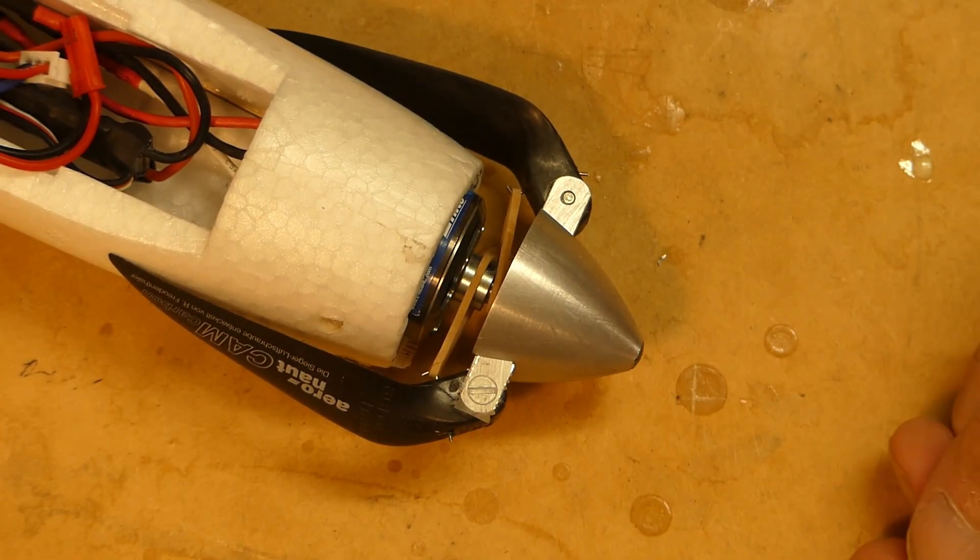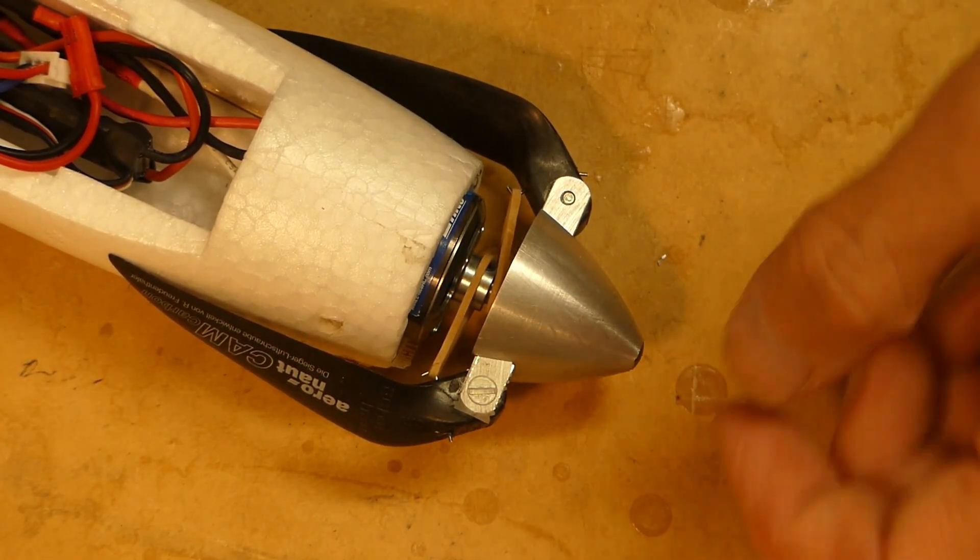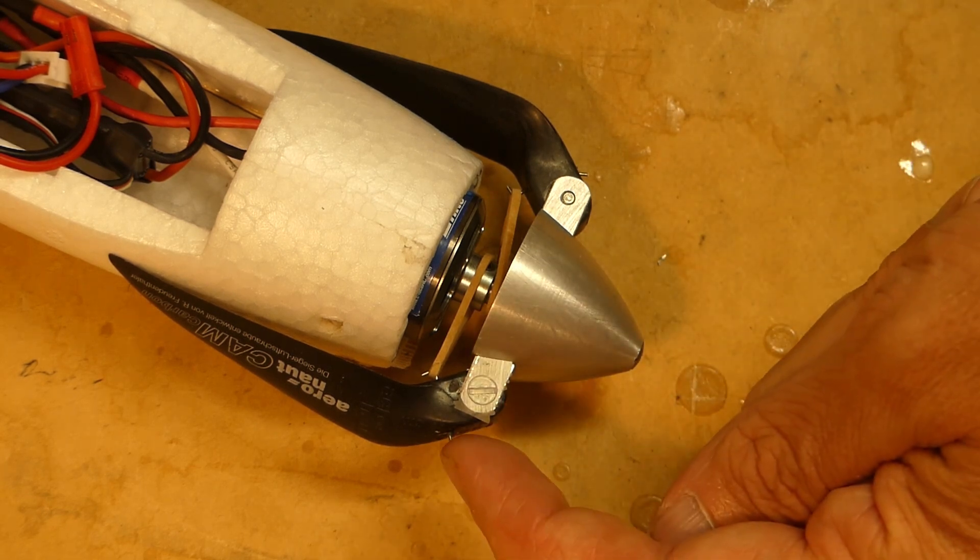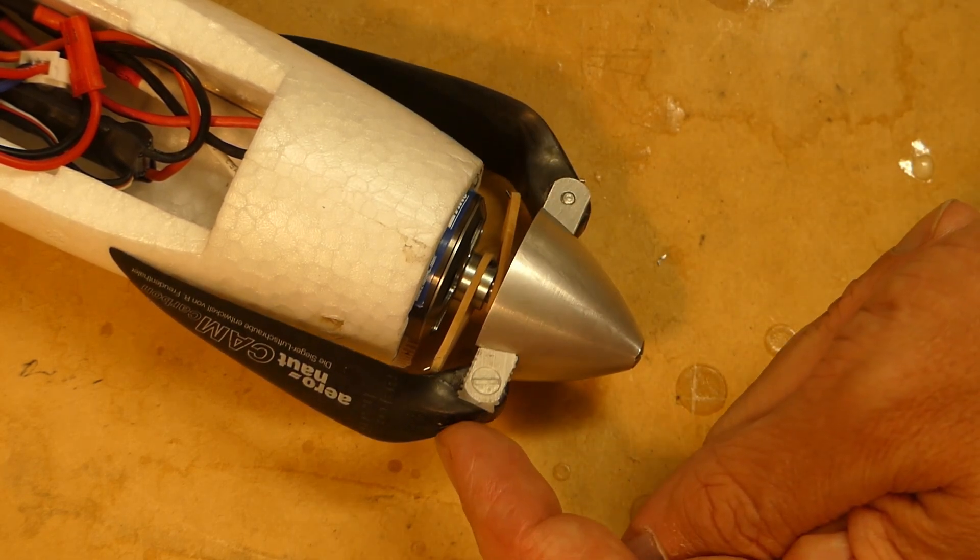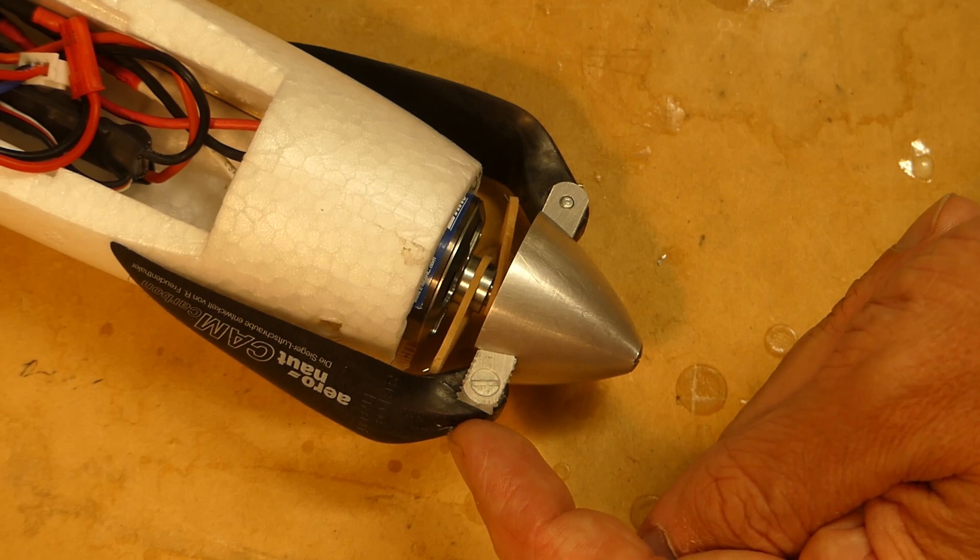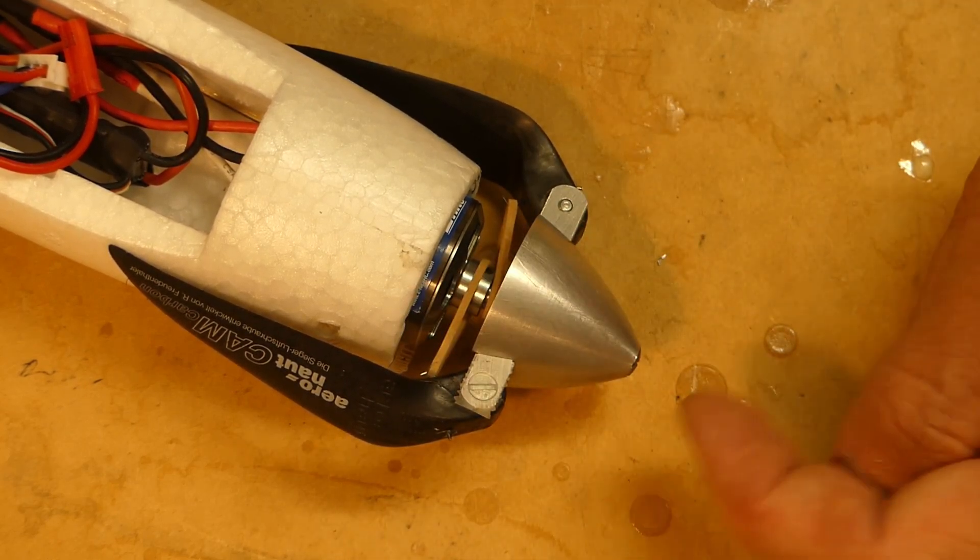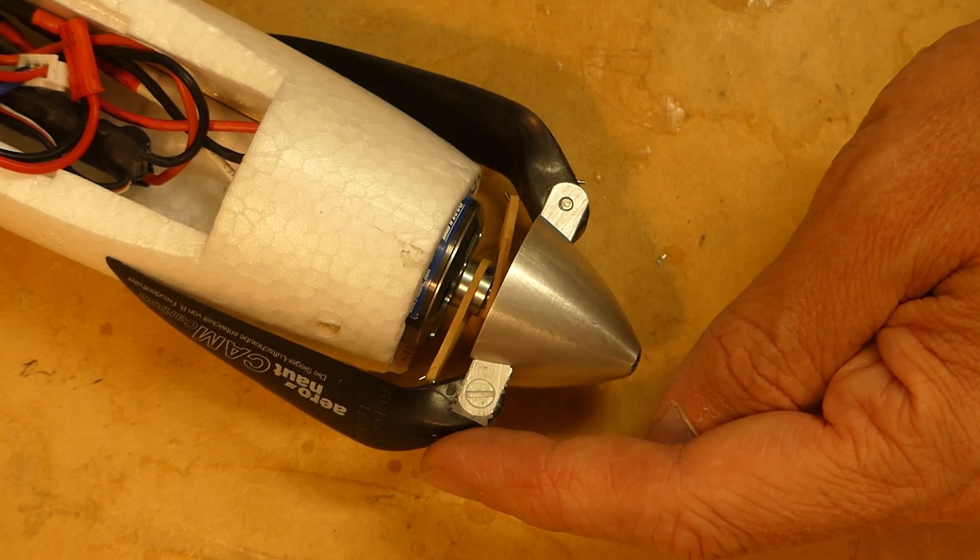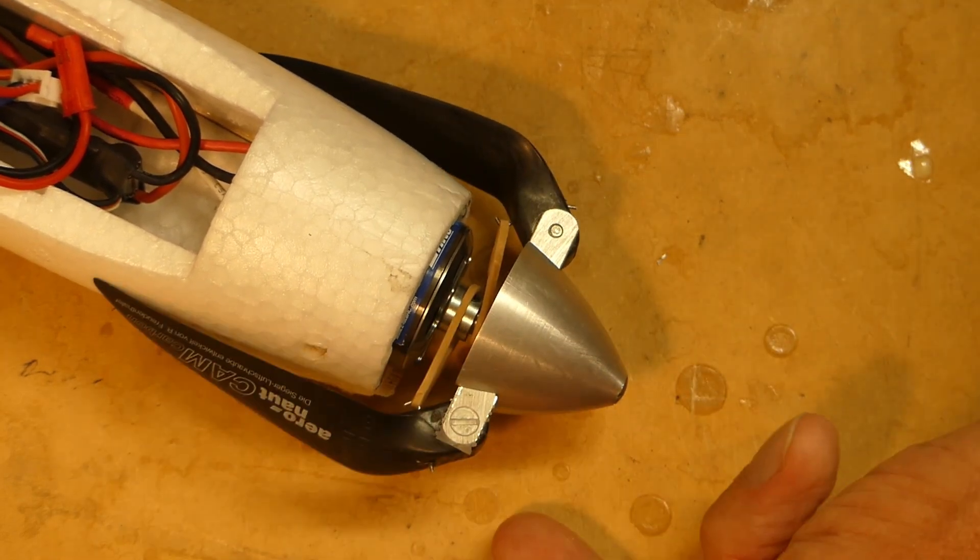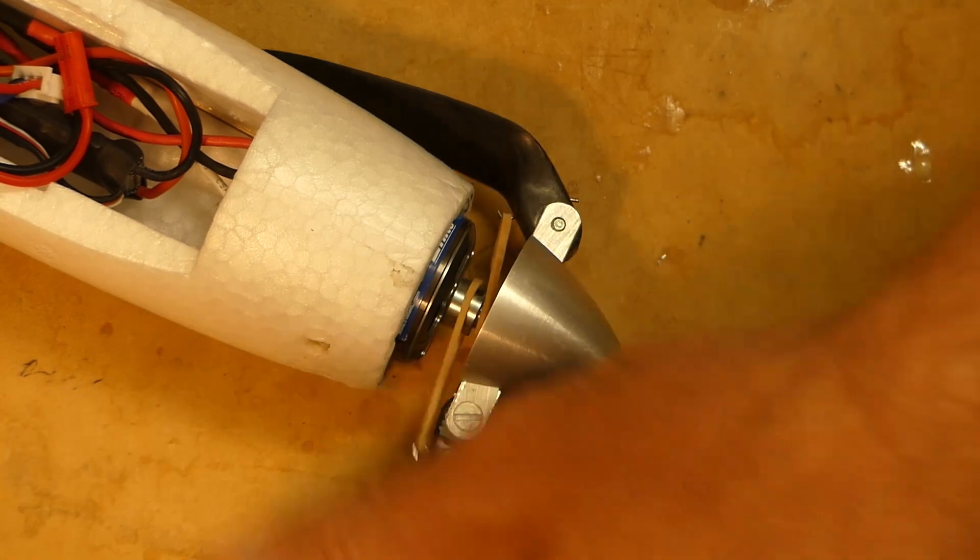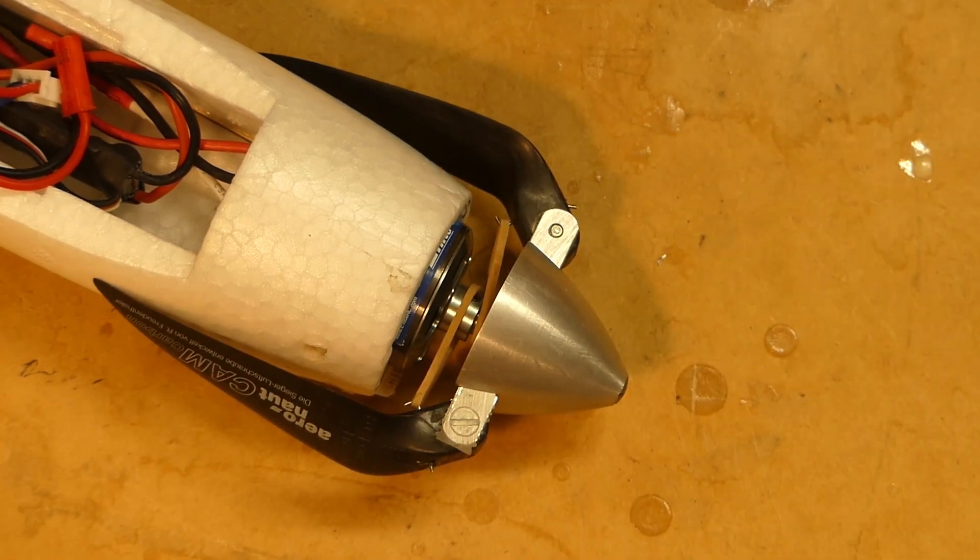The propeller blades are held with rubber bands which in turn are held by steel wire which goes through the propeller blade, I drilled that myself, with an angle and then CA glued into place and that works really well. Highly recommended.